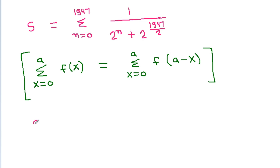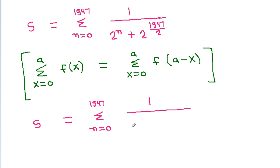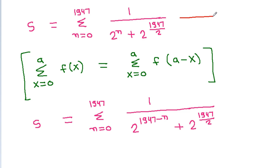Applying this property, S will also equal the summation from n equals 0 to 1947 of 1 divided by 2^(1947 minus n) plus 2^(1947/2). Suppose the original expression is equation 1 and this new expression is equation 2.